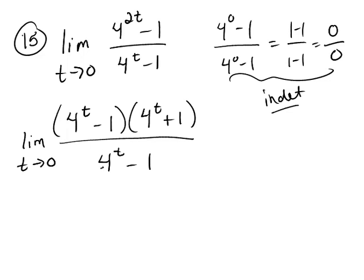And then the 4 to the t minus 1's cancel, and so now you have just the limit as t goes to zero, 4 to the t plus 1, and when you plug zero in for t,